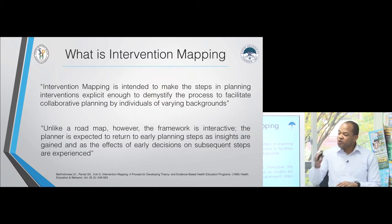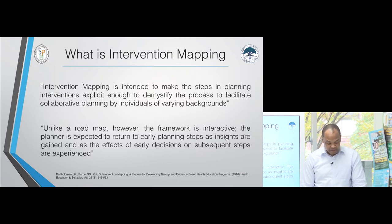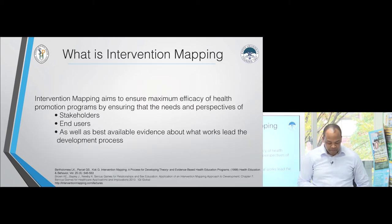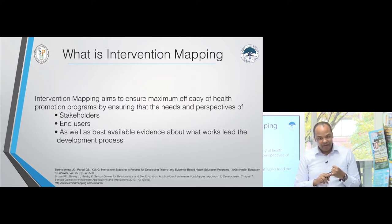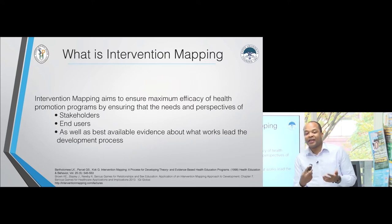Unlike a roadmap or guideline, the framework is interactive. The planner is expected to return to earlier steps even if they are in the last stage, to refine what they've already done and improve as they go. It's not just a one-way roadmap — you can move from step one to two, go back to one, then proceed to three, four, five, go back to three. Intervention mapping aims to ensure maximum efficiency of health promotion programs by linking stakeholder needs, end-user perspectives, and evidence in the field.